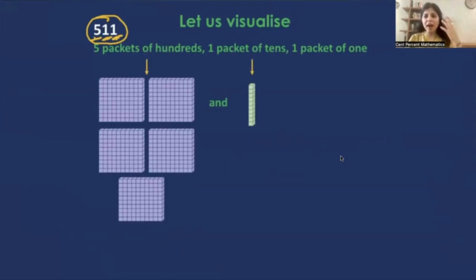I repeat, try and visualize the numbers as packets. So we have got 5 packets of hundreds, 1 packet of 10, and 1 packet of 1. That means it is 5 of 100, and 1 of 10, and 1 of 1.